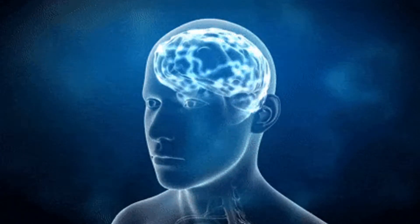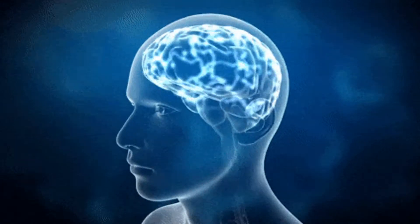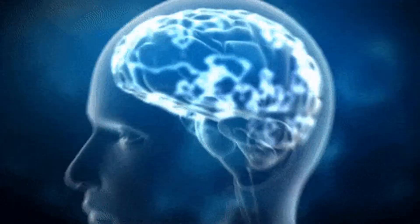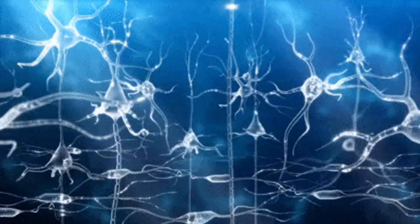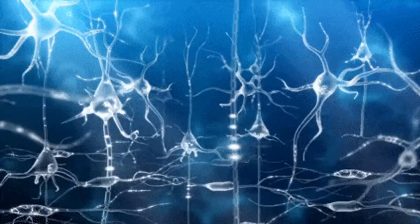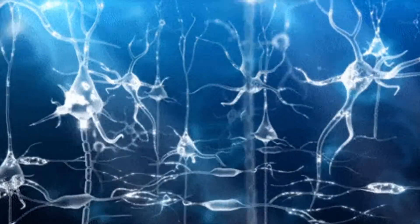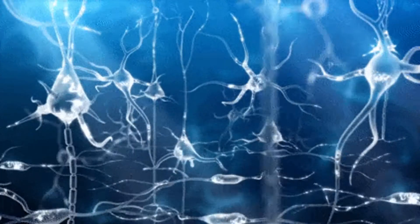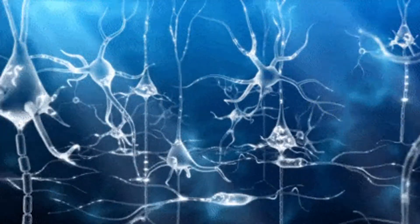Your nervous system, which includes your brain, your spinal cord, and all the nerves in your body, is a communication system. The cells of the nervous system that do the communicating are called neurons. They send electrical signals from one place to another.